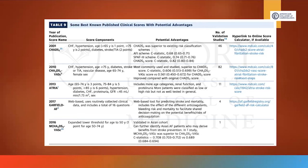As a Class 3 recommendation providing no benefit: bleeding risk scores such as HAS-BLED should not be used in isolation to determine eligibility for oral anticoagulation. They should only supplement decision-making — identifying modifiable bleeding risk factors — rather than be used to withhold anticoagulation in high-risk patients. One reason is that variables like age, hypertension, and renal dysfunction can increase both embolic and bleeding risk simultaneously.